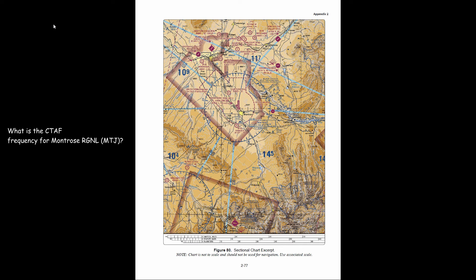What is the CTAF frequency at Vermont Rose RGNL MTJ? We find it in the middle of the screen. The CTAF is to the left of the capital C — 122.8. You'll want to bring a magnifying glass to the test to zoom in and get the correct answer. They might try to slip you up with 122.9 or another frequency like 135.225, but the correct answer for CTAF here is 122.8.